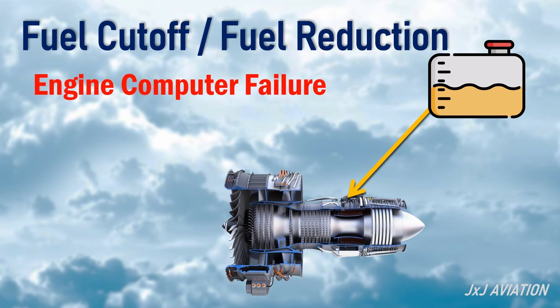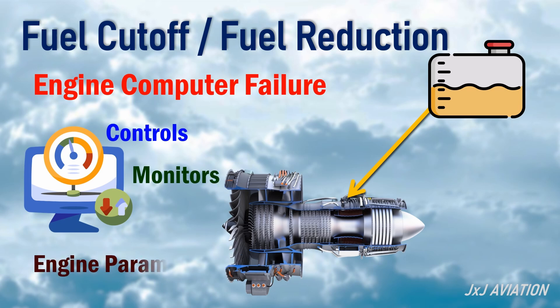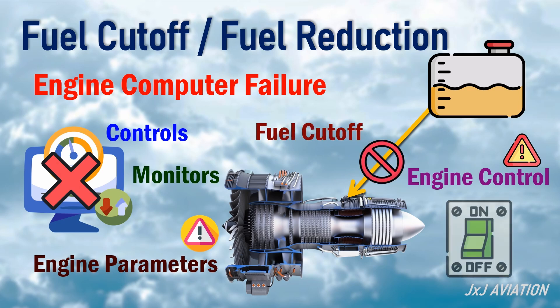Engine Computer Failure. The engine's computer controls and monitors the engine parameters as per the aircraft requirements. In case of failure of this computer, the engine control is lost and the engine parameters are not monitored. So the fuel must be cut off by putting the engine switch to off.